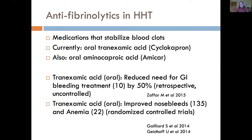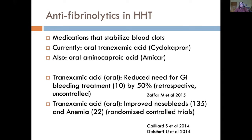What about anti-angiogenic therapy? AVMs in HHT form due to an imbalance in angiogenesis — the term for blood vessel development and growth. People with HHT have lots of normal blood vessels, but some have turned into malformations. Probably one of the mechanisms is that an injury occurs at a site, and when the body tries to repair the blood vessels, there's a dysfunctional repair process — a dysfunctional angiogenesis — and the AVM forms.